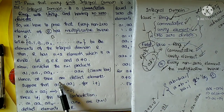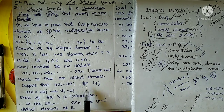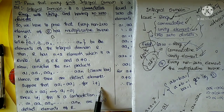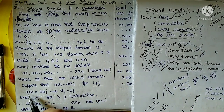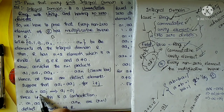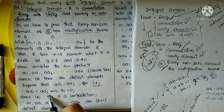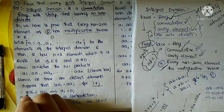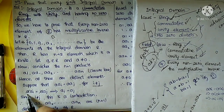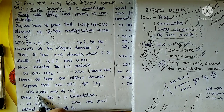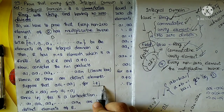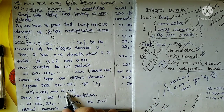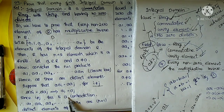Suppose a·ai equals a·aj for i not equal to j. By cancellation law, cancel a from both sides, then ai equals aj. But i is not equal to j — that is a contradiction. So the assumption is wrong, meaning all the products a·a1, a·a2, and so on up to a·aN are distinct elements.